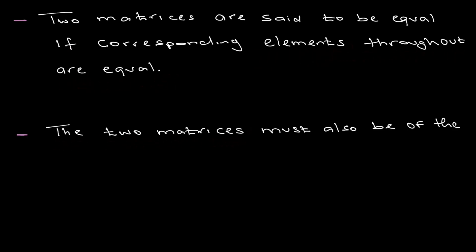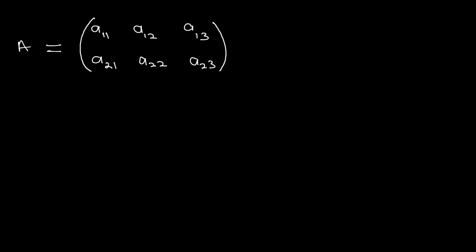The two matrices must also be of the same order. If we have matrix A and matrix X, if matrix A is written like that and matrix X is written like that.